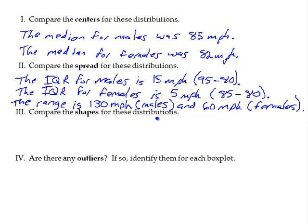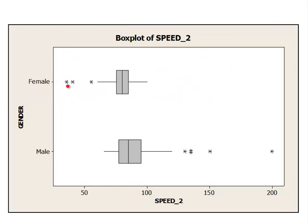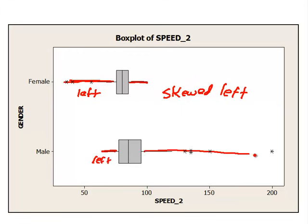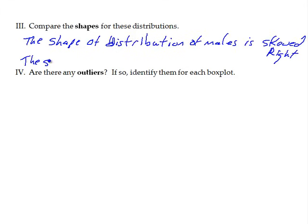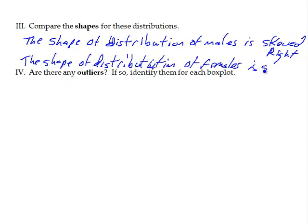Next question, we compare the shapes of the distribution. For the females, this is our left tail, and this is the right tail. This indicates that we have a longer left tail. So we would say this is skewed left. If we look at the males, here's the left tail, and there's the longer right tail. We would say this is skewed right. So the shape of the distribution of males is skewed right, and the shape of the distribution of females is skewed left.